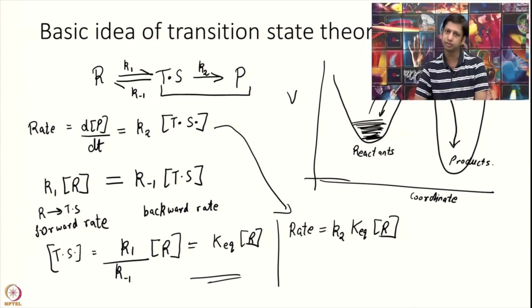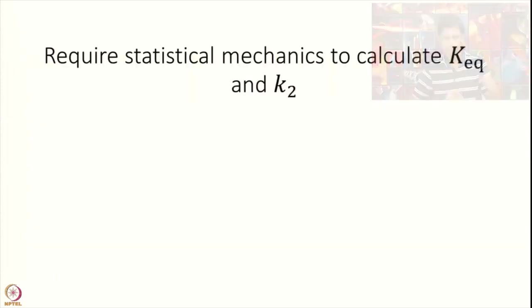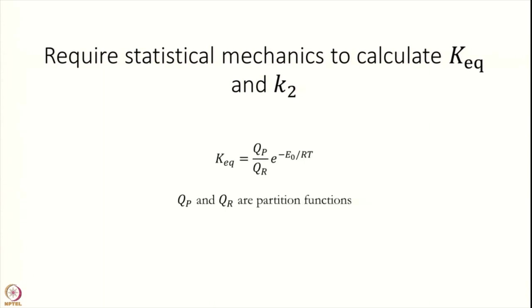After doing this basic analysis and making all these assumptions, what we have to do now is estimate k₂ and K_eq. To calculate K_eq and k₂, we require a little bit of statistical mechanics — without that we cannot actually calculate these quantities. As it turns out, K_eq particularly is related to what are called partition functions. These relations are very fundamental in statistical mechanics, and to understand them we will need to study partition functions. That is what we are going to do in today's and the next module.